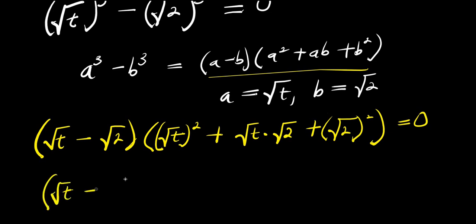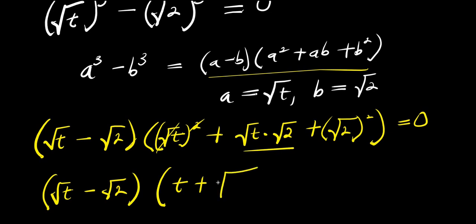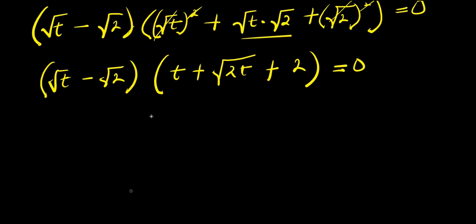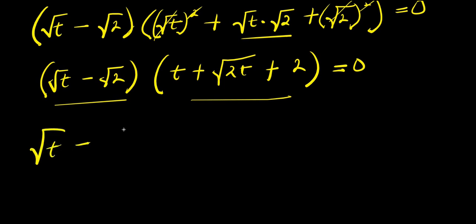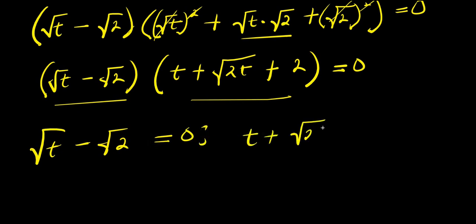At this point I can equate each factor to 0. Simplifying the second factor — square root of t squared is t and square root of 2 squared is 2 — I have: square root of t minus square root of 2 equals 0, and also t plus square root of 2t plus 2 equals 0.